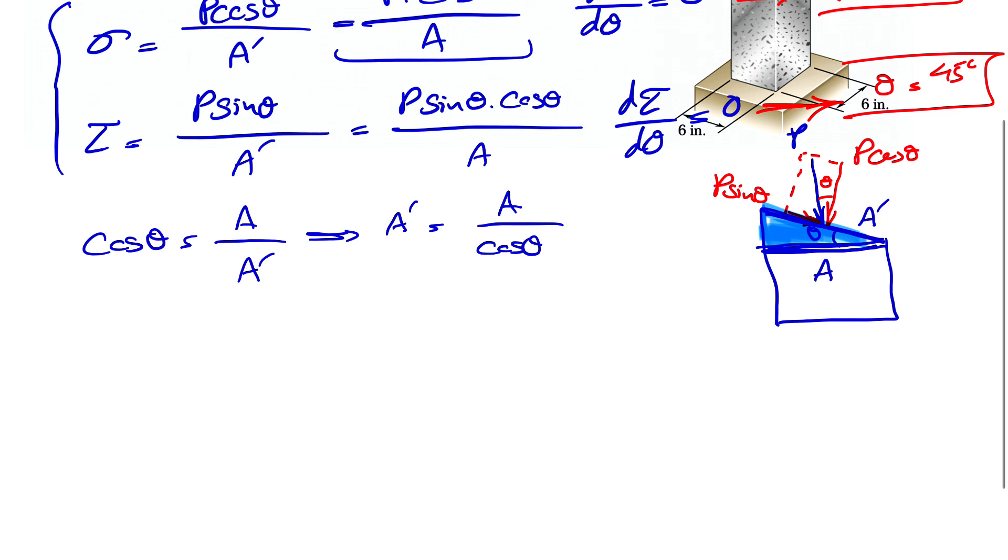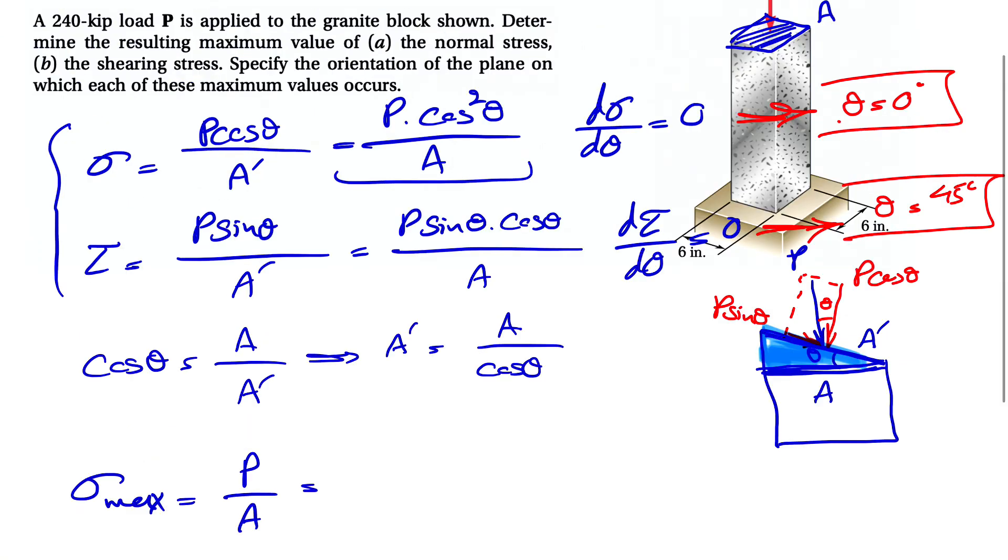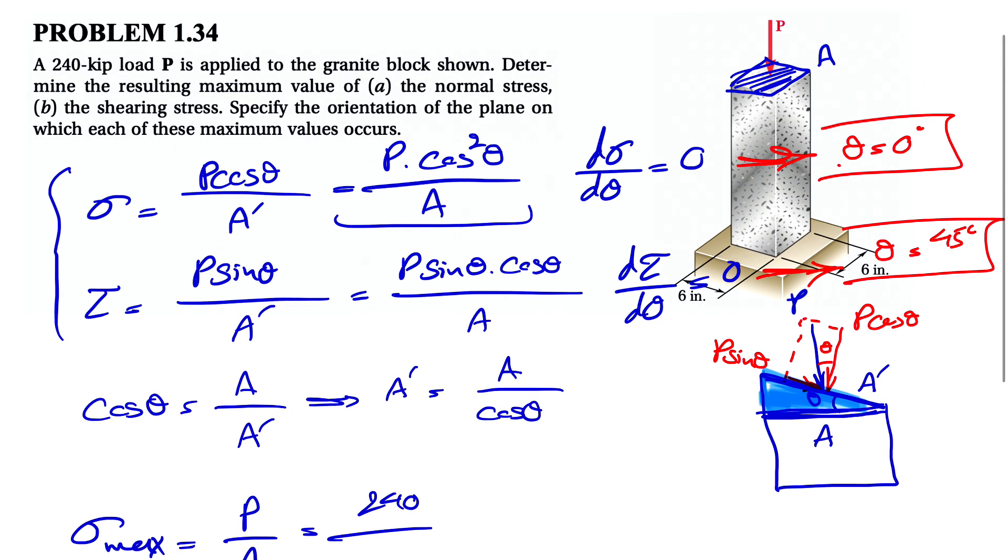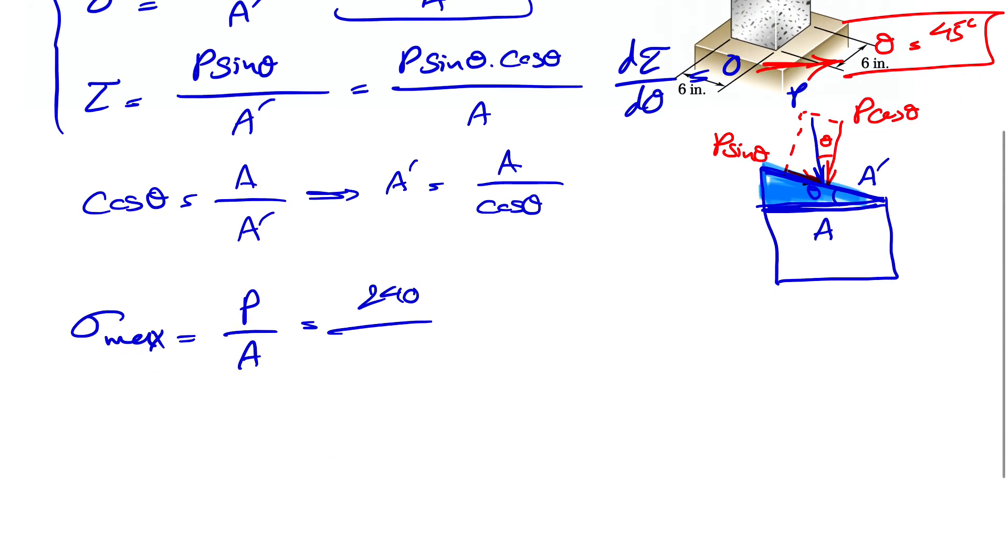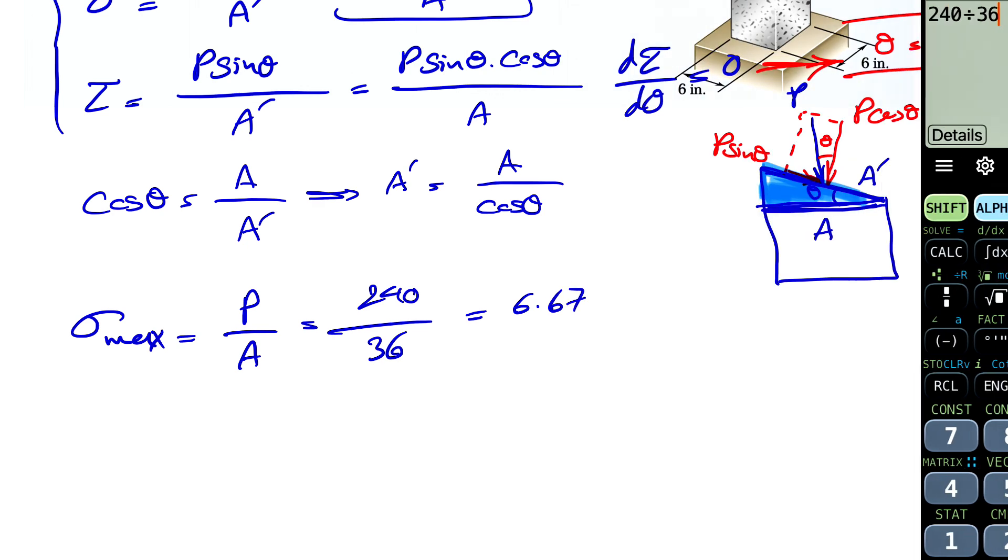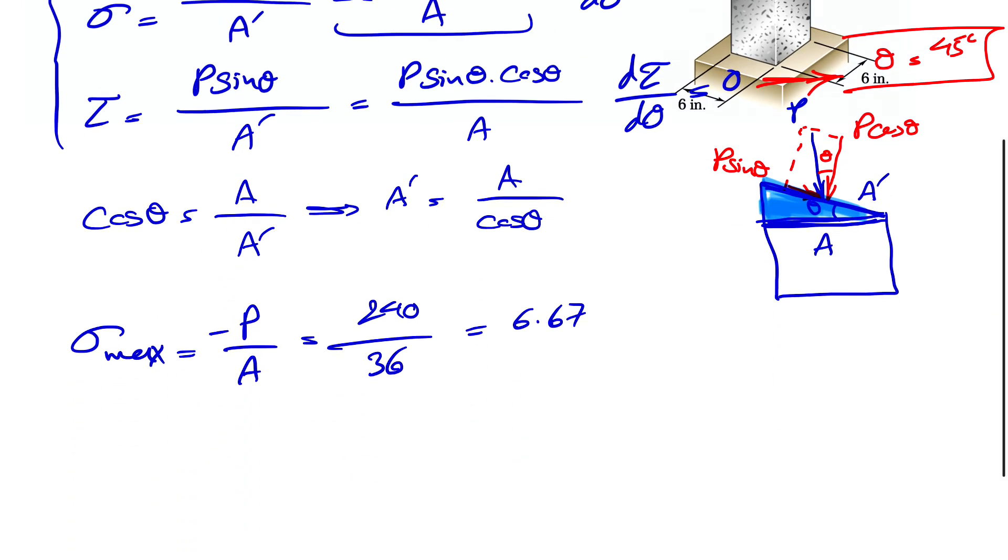Now that we know this, if we put theta in this formula, we get the maximum for normal stress. Cosine squared of zero, we know cosine of zero is one, so basically we have P over A. From the question we know P is 240 kips and the area is six times six, so 36. Let's calculate this: 240 divided by 36 gives us 6.67 ksi. Keep in mind that the force is in compression, so we put a negative sign to show the compression.